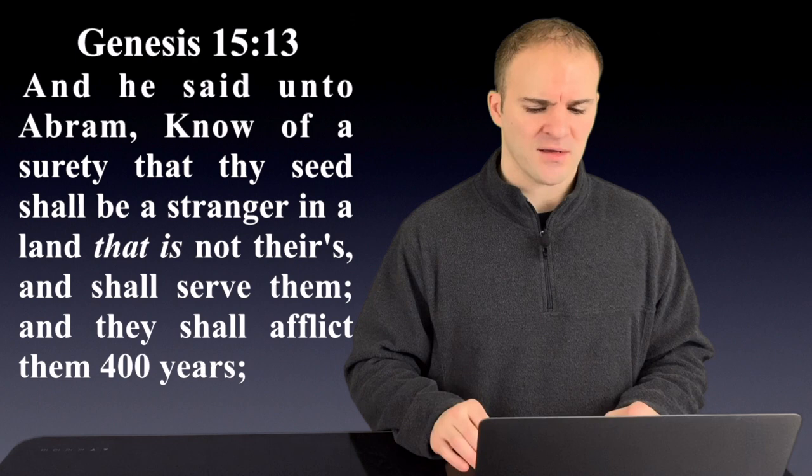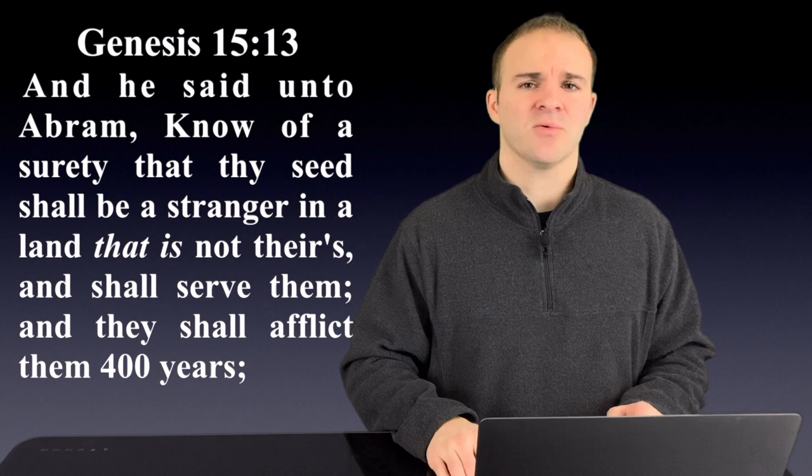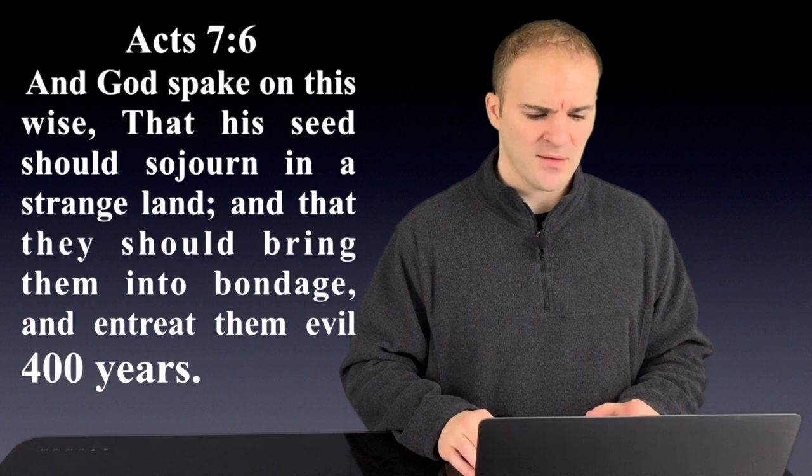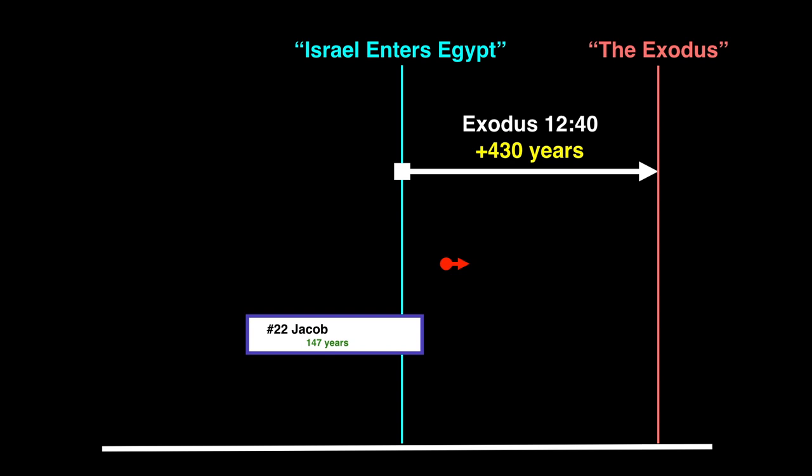Now the other verse that's attached to Exodus 12:40 is Genesis 15:13 that says, And he said unto Abram, Know of a surety that thy seed shall be a stranger in any land that is not theirs, and shall serve them, and they shall afflict them four hundred years. Stephen reiterated the same thing in Acts 7 saying, And God spoke on this wise, that his seed should sojourn in a strange land, and that they should bring them into bondage, and entreat them evil for four hundred years. So on our timeline, the four hundred years prophesied by God to Abram falls under the umbrella of Exodus 12:40, and likely ends with the Exodus taking place, because any earlier would have Jacob being in slavery.